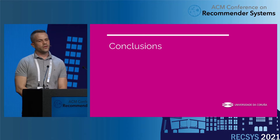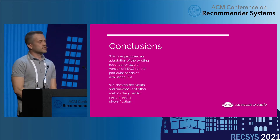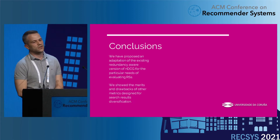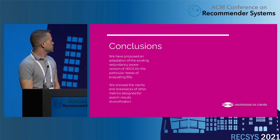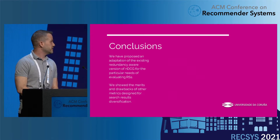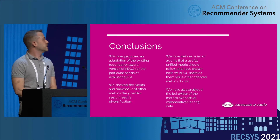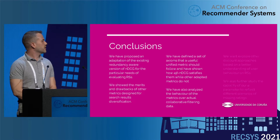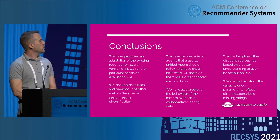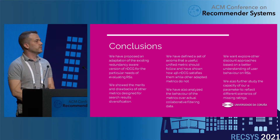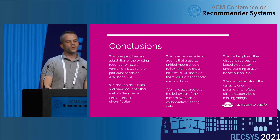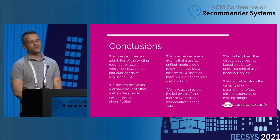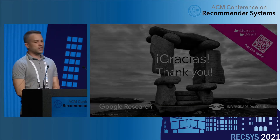To conclude: we proposed an adaptation of existing metrics from retrieval based on NDCG, showed their behavior and problems both axiomatically and experimentally, defined a set of axioms any good metric should follow, and analyzed metrics with actual data. As future work, we want to explore other discounting approaches and how they correlate with actual user behavior in online settings, and study the capacity of the alpha and beta factors to cope with different scenarios and rating patterns. Thank you very much.